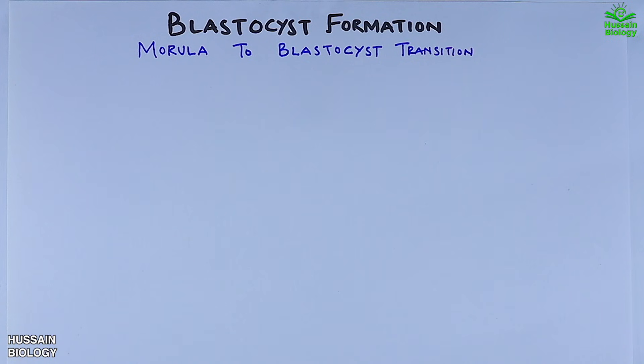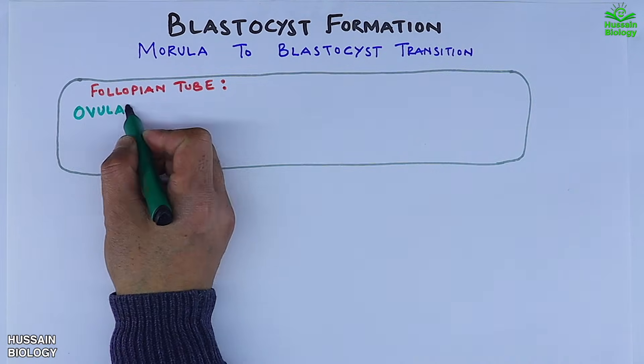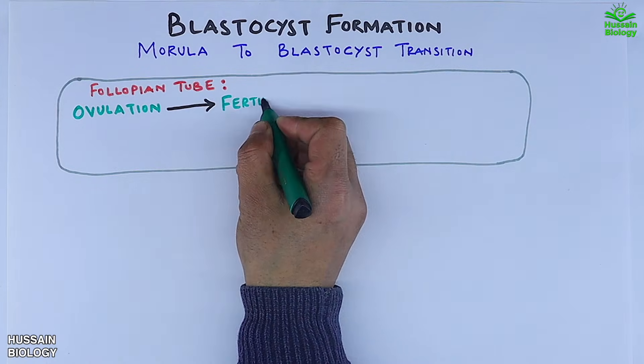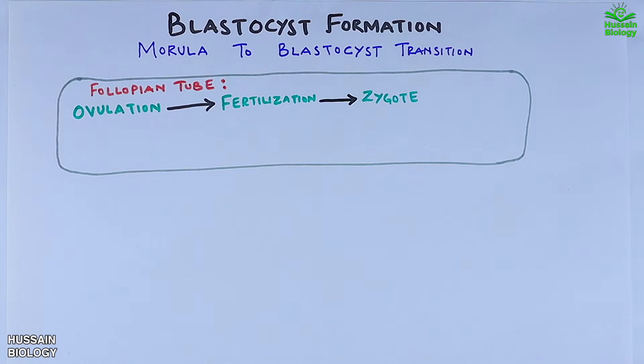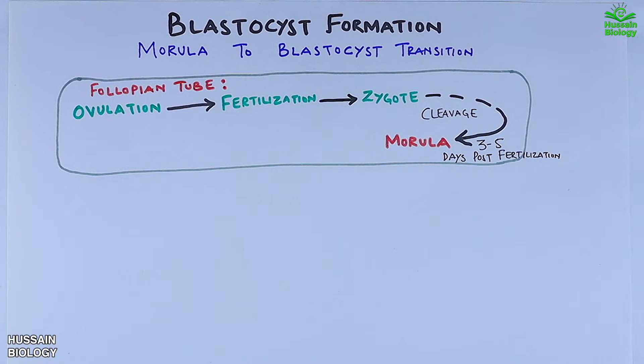Simply if we see what happens in the fallopian tube, it starts with the ovulation, then fertilization, then zygote formation. Then this zygote is cleaved into morula that occurs three to five days post fertilization.